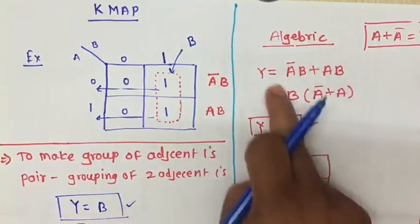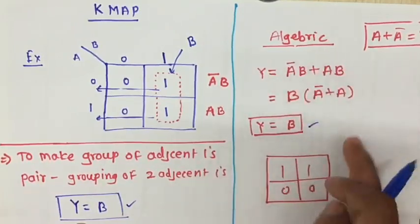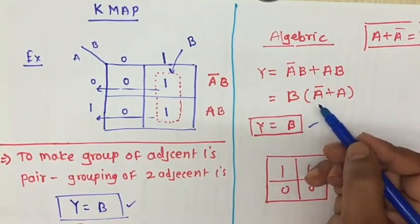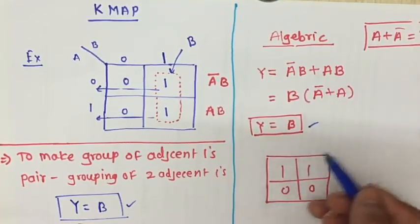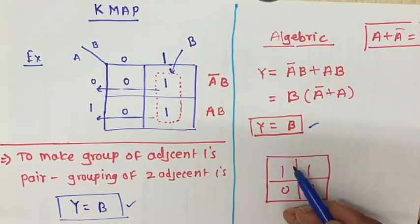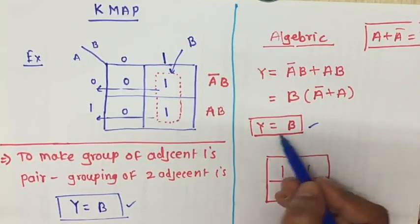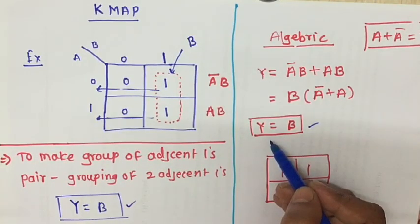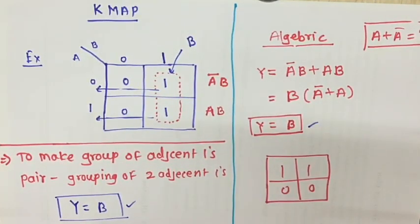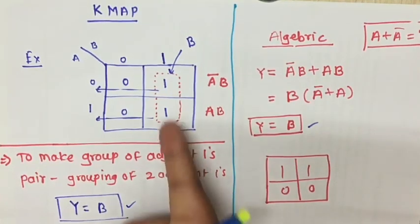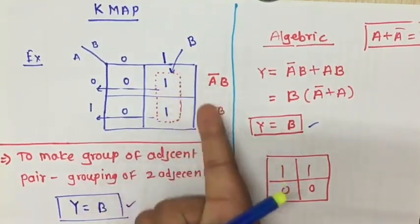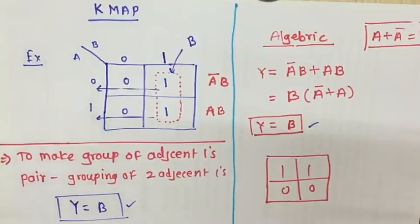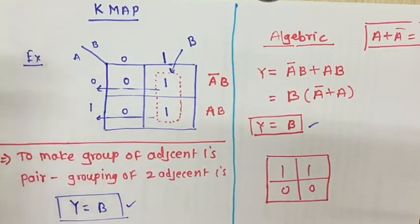In the algebraic simplification method, we need to apply Boolean laws, theorems, De Morgan's theorems and properties to simplify the equation. But with K-map grouping, we do not need to use Boolean laws and theorems at all — we directly write the equation from the grouping of ones. That is the advantage of K-map.